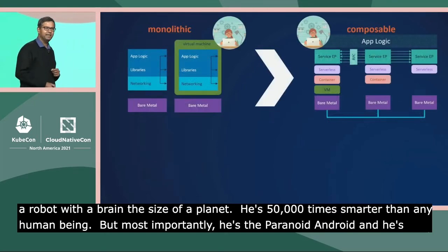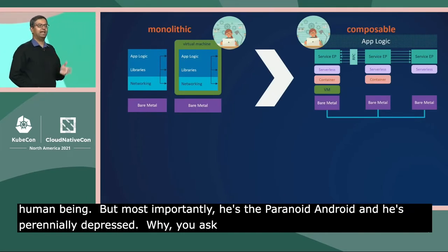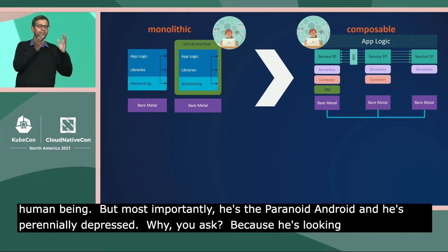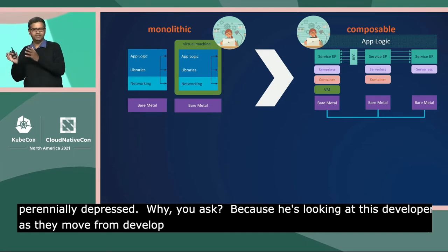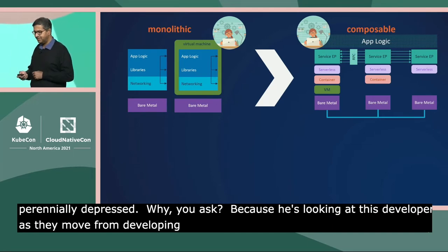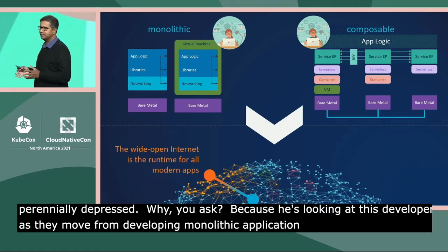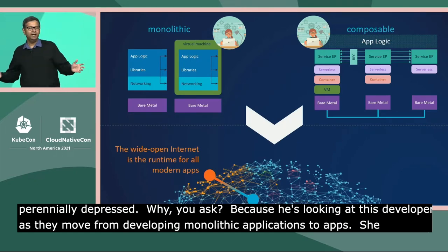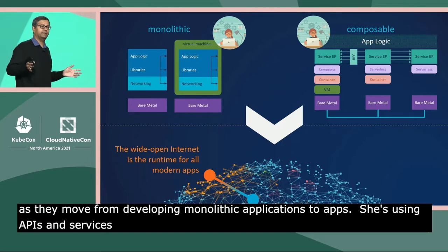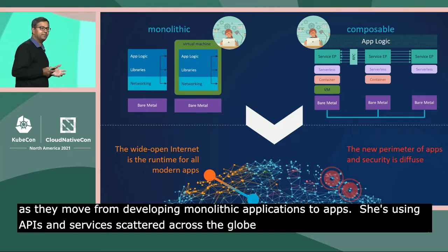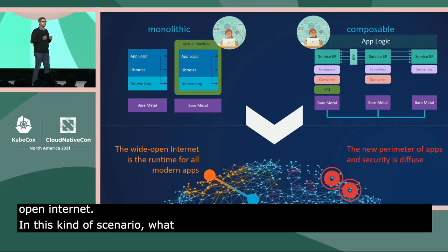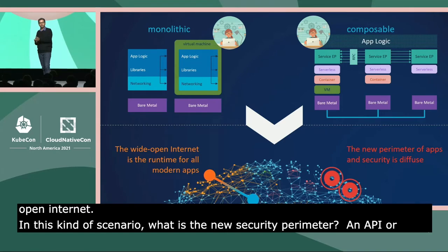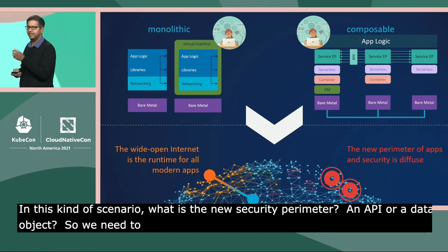And he's perennially depressed. Why, you ask? Because he's looking at this developer as she moves from developing monolithic traditional applications to cloud-native, modern, distributed apps. And as she does that, she's using APIs and services that are scattered across the globe and are running over the wide-open internet.